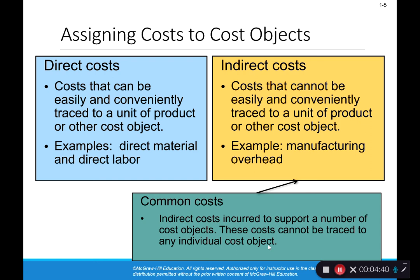The cost of french fries at the Dover store is also a direct cost — if we get rid of the Dover store, we get rid of the cost of those french fries. But if we change our cost object to divisions within the Dover store — say the fries division versus the burger division — then the store manager's salary becomes an indirect cost to the fries division because you can't directly trace it to just the fries division. However, the fries would still be a direct cost to the fries division.